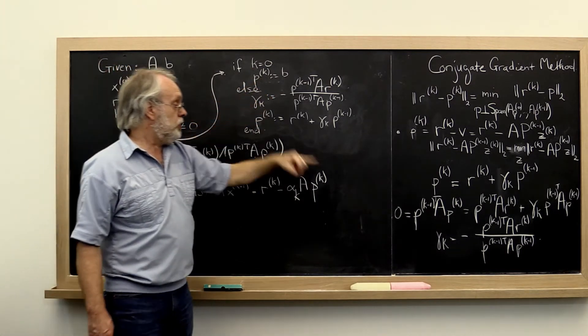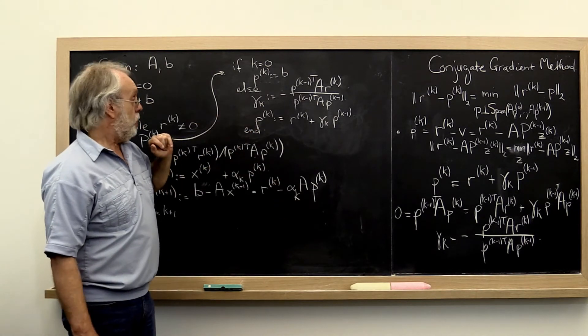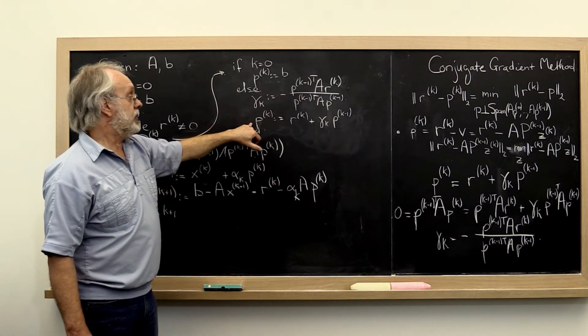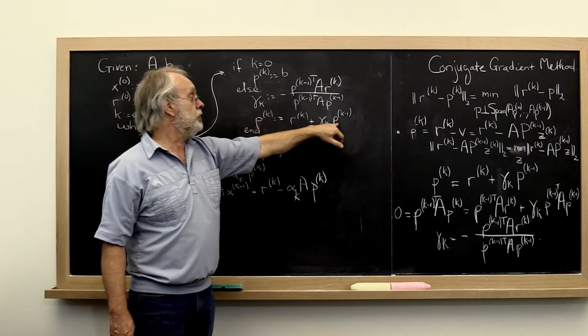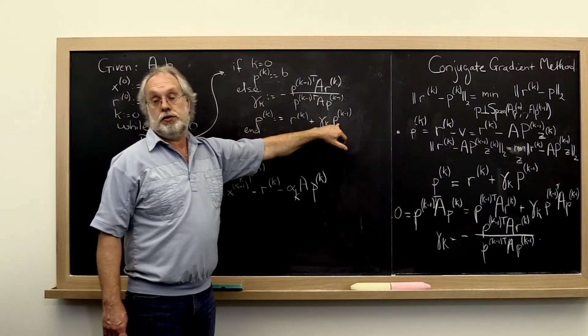Otherwise we compute this gamma_k that we just described. And then we take our next search direction to be a linear combination of the current residual and the previous search direction.